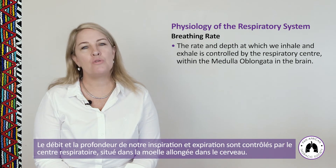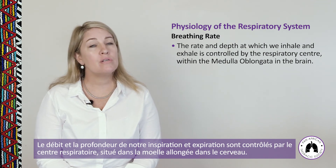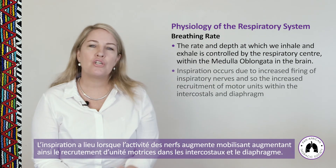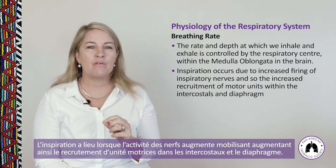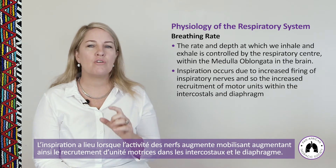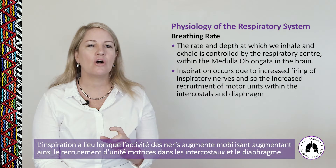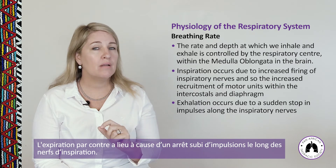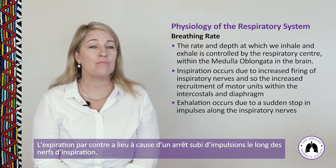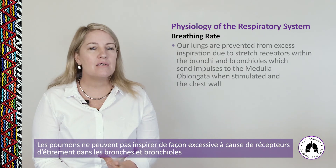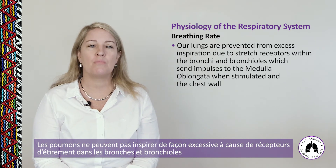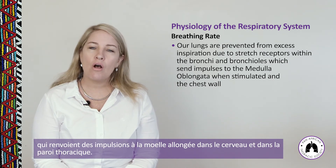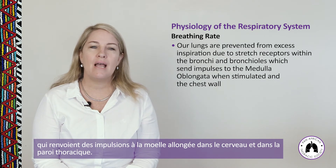The rate and depth of breathing is controlled by the respiratory center within the medulla oblongata in the brain. Inspiration occurs due to increased firing of inspiratory nerves and increased recruitment of motor units within the intercostals and diaphragm. Exhalation occurs due to a sudden stop in impulses along the inspiratory nerves. Our lungs are prevented from excess inspiration by stretch receptors within the bronchi and bronchioles, which send impulses to the medulla oblongata.